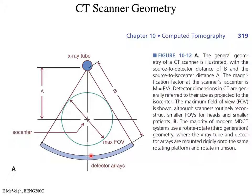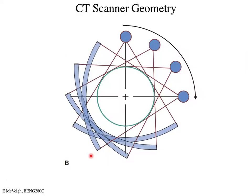Here's a cartoon of how the pictures are taken as we rotate. Both the source and the detector rotate together on a very rigid mechanical gantry, and the entire thing rotates around.